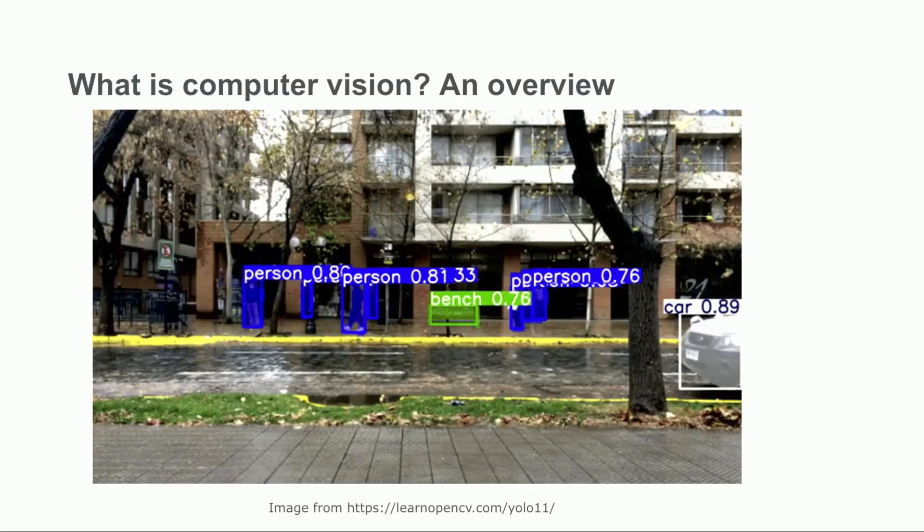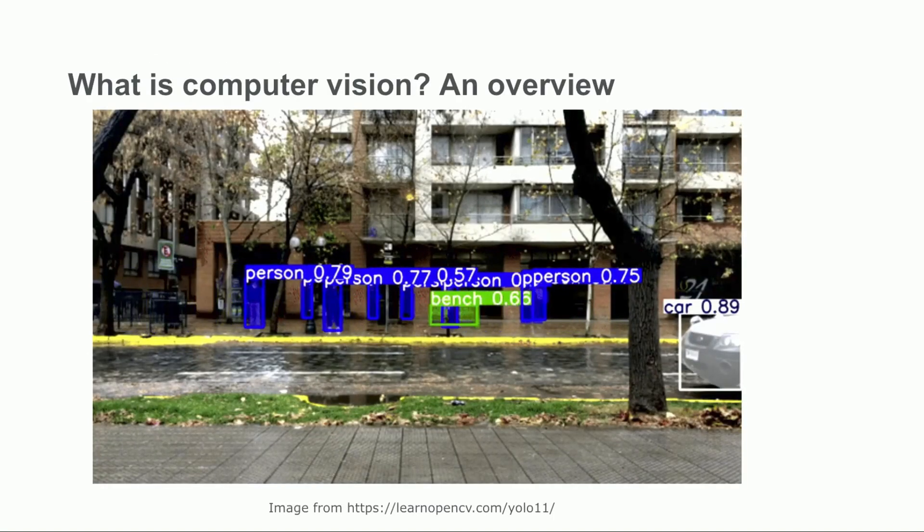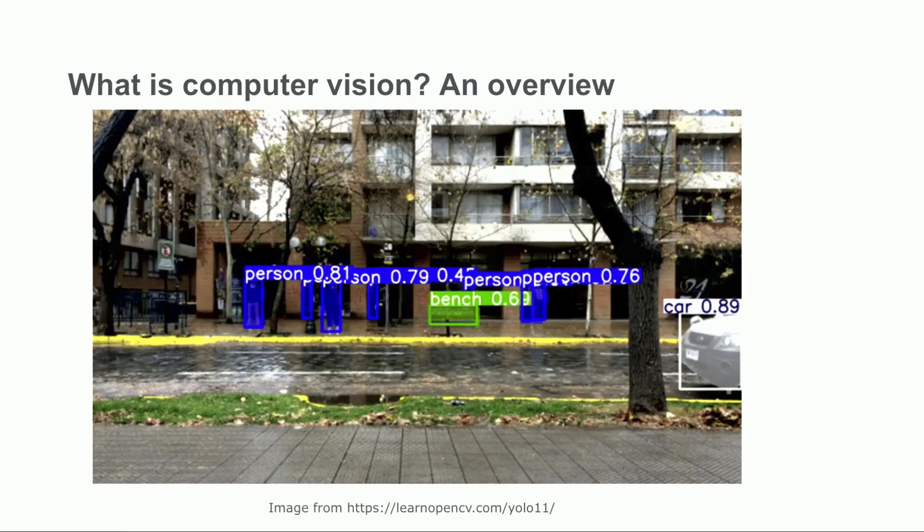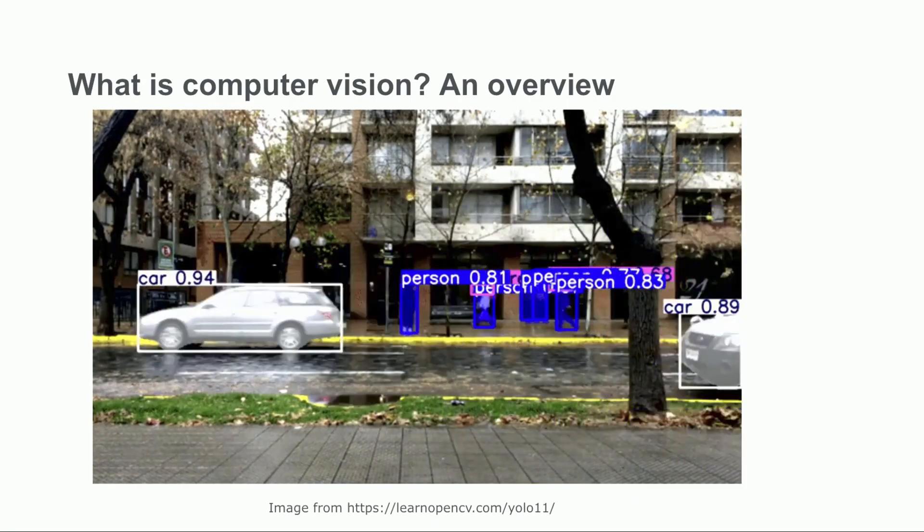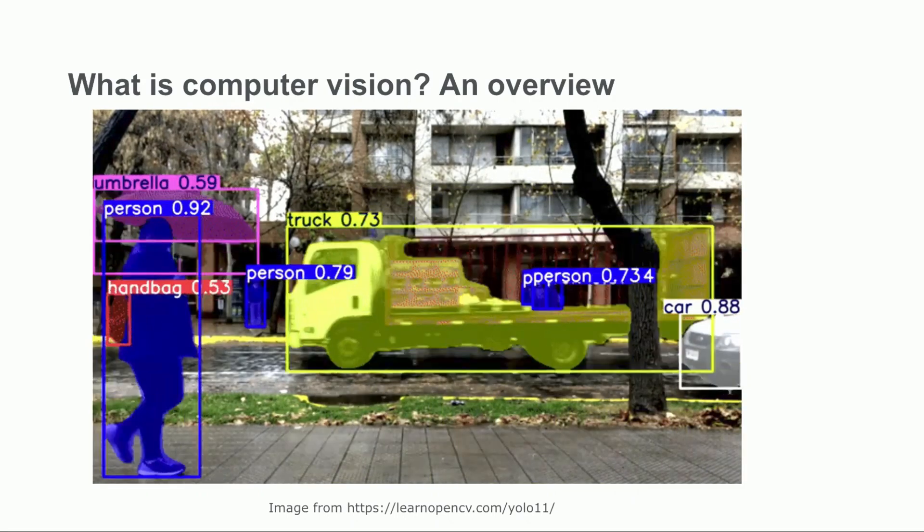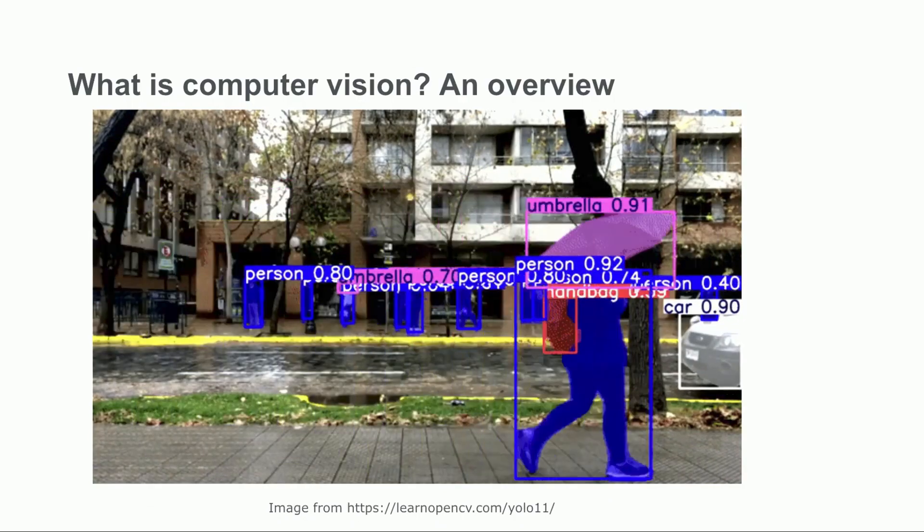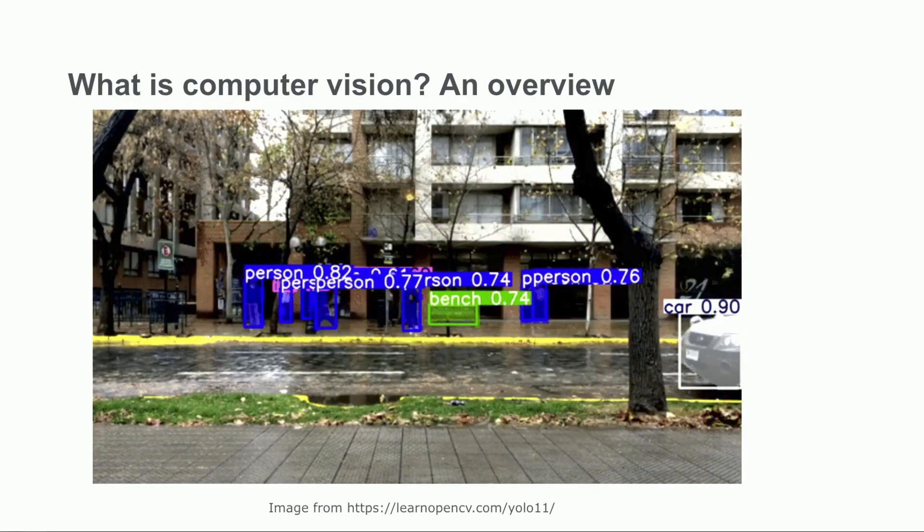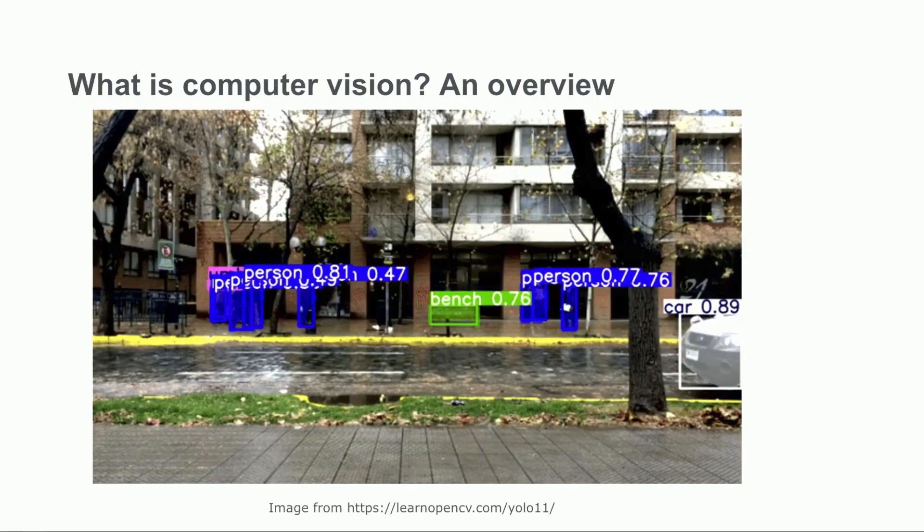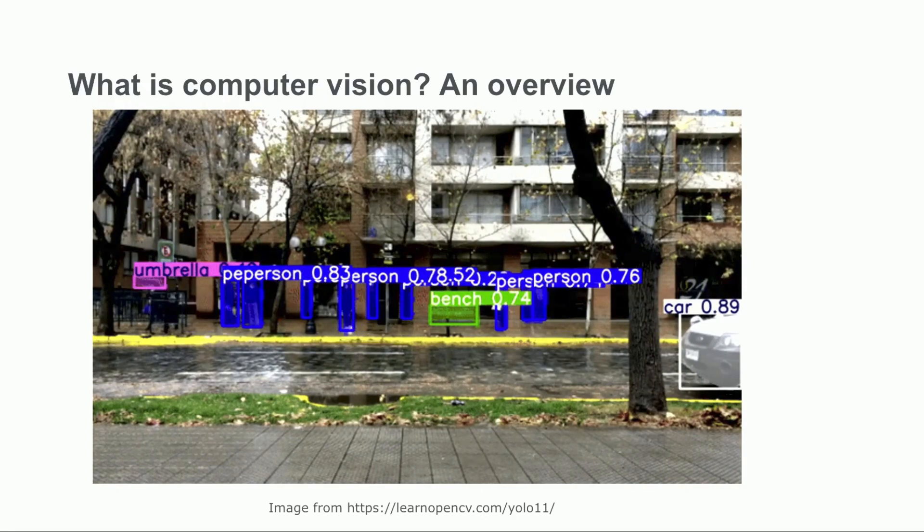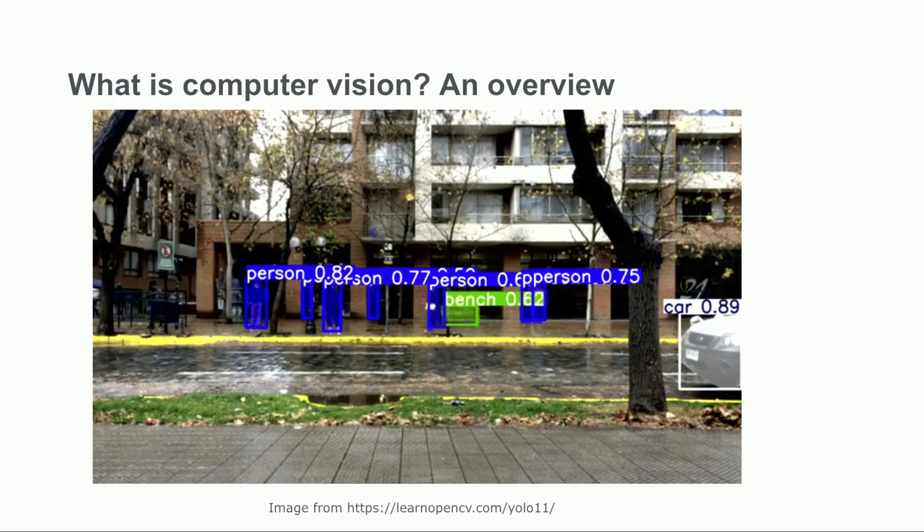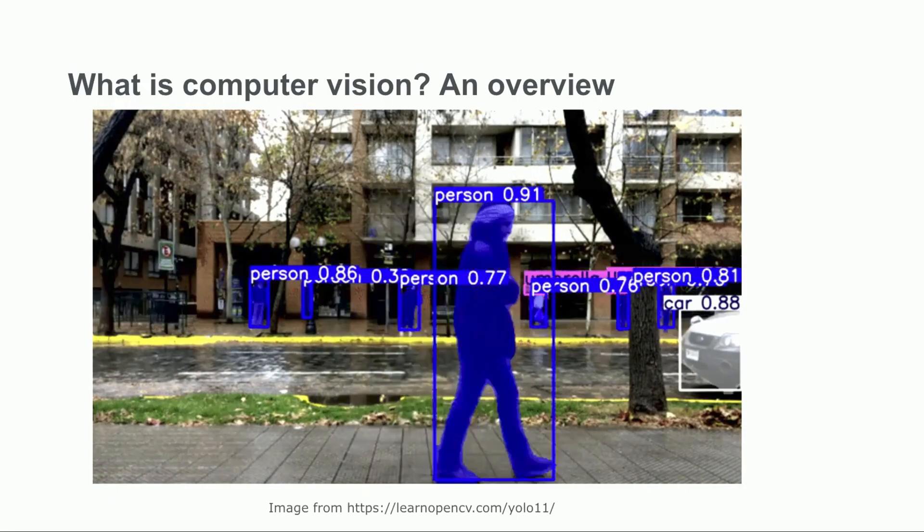Let's start by defining computer vision. Computer vision gives machines the ability to understand the content of digital images through algorithms and training data. Computer vision is one of the most active fields in artificial intelligence and has found many applications in science and industry, which we will explore throughout this course.